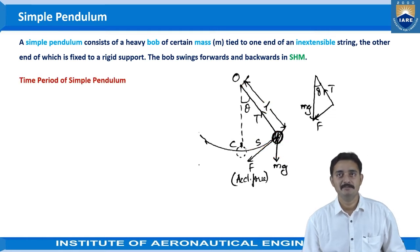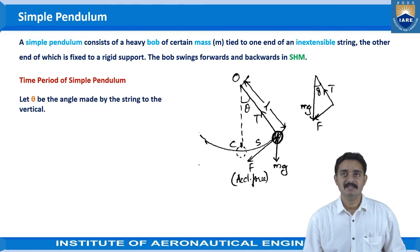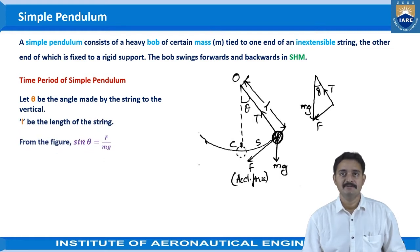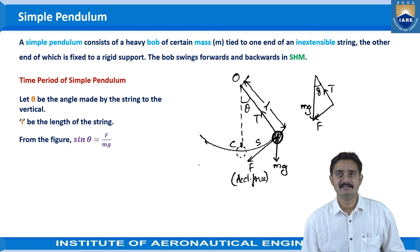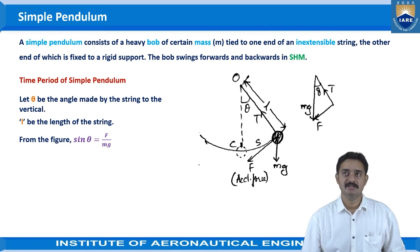Now, the time period of simple pendulum. Let theta be the angle made by the string to the vertical. As you can see in the figure, theta is the inclination that we are considering for maximum movement of the bob. L be the length of the string and from the figure sin theta is equal to f by mg.